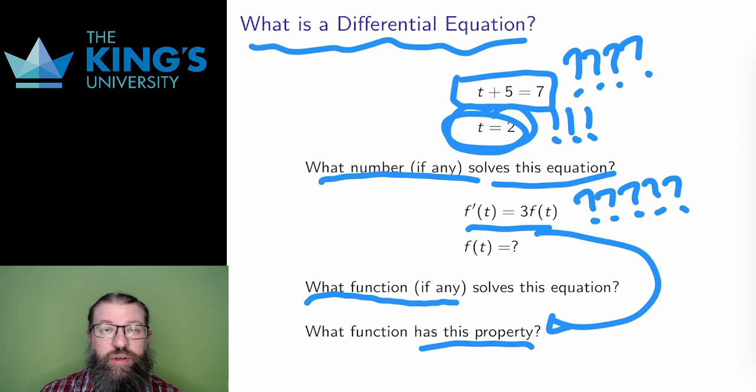The order of a differential equation is the highest degree derivative. This equation only has a first derivative, so it is a first-order differential equation. If there is only one independent variable, as is the case here with the variable t, then this is called an ordinary differential equation, or ODE for short.